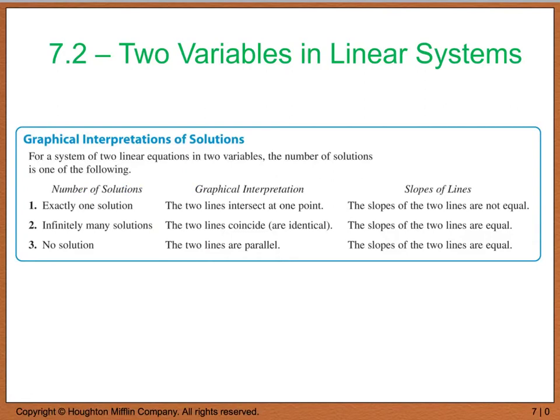When we look at a system of two linear equations and two variables, we have three different possibilities for the number of solutions. We can have exactly one solution as we showed in example one. This is where graphically our two lines are going to intersect at one point, and what this means is that our slopes are not equal. When we have a system that has infinitely many solutions, this tells us that the two lines are the same line because the two lines are going to coincide, and this tells us that our two slopes then must be equal if they are the same line.